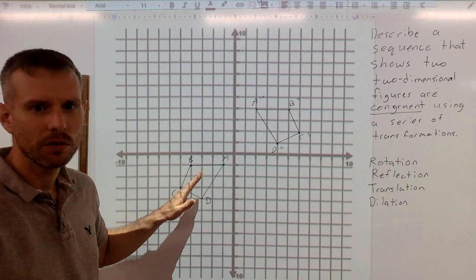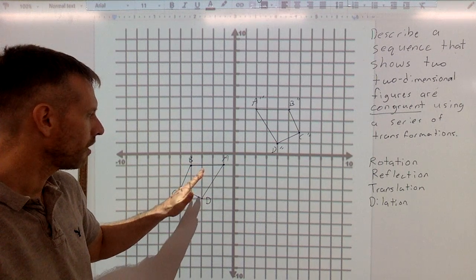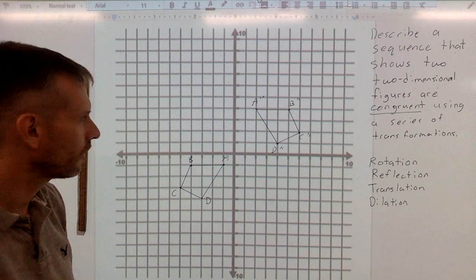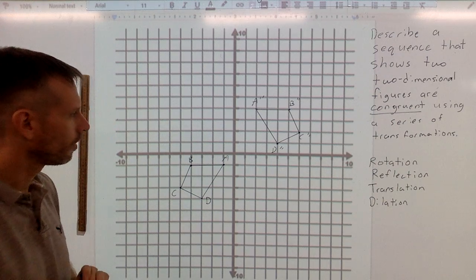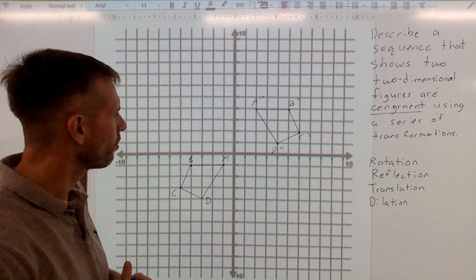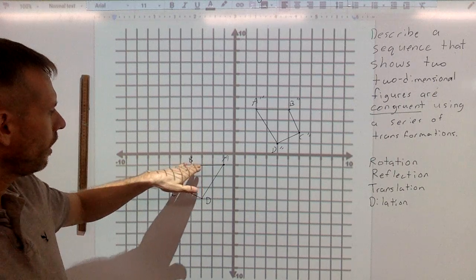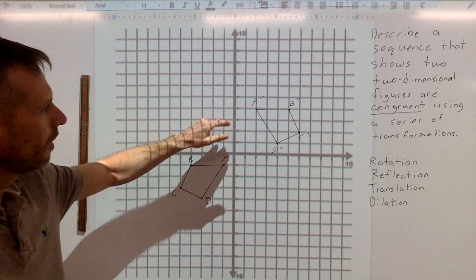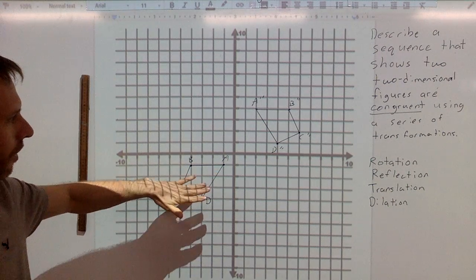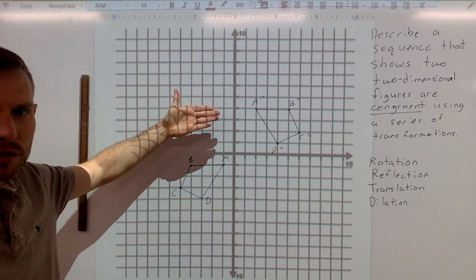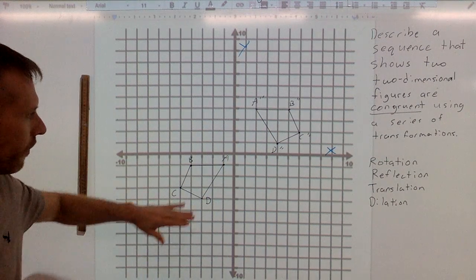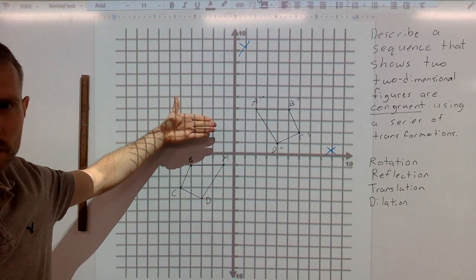Let's say we need to see what transformations can make this image transform into the prime image over here. So first, I'm going to look at the orientation of the letters and the shape. I'm going to see that here the A and the B are on top, and here the A and the B are also on top, and the C and D are on the bottom. So that makes me think that it's probably not a reflection over the X axis. If it was a reflection over the X axis, it would seem like the C and the D would be on top.